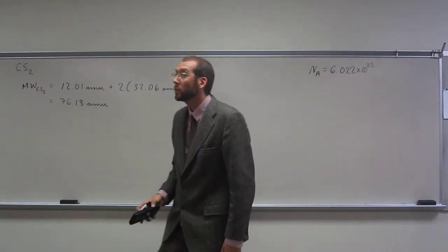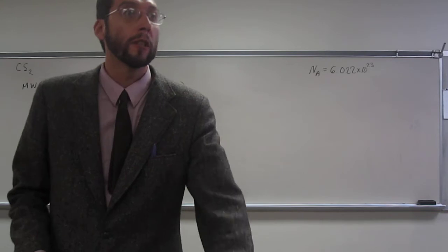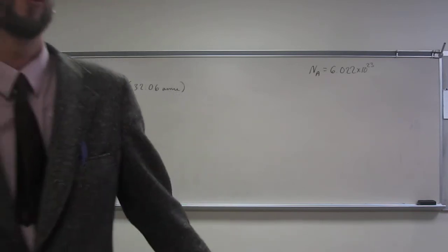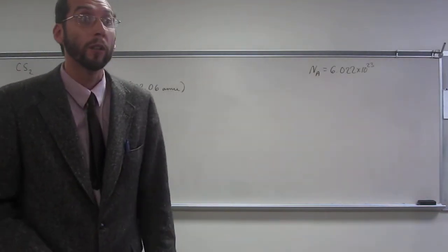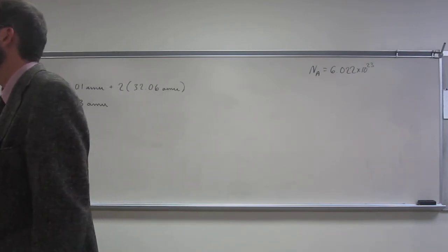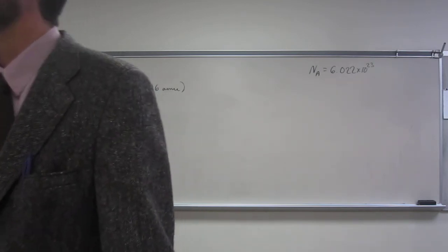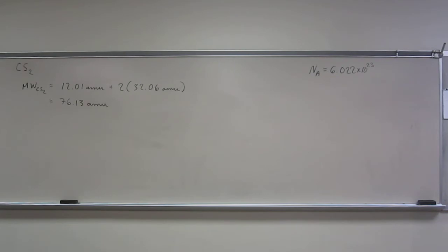So if I have a mole of pencils, right, it's 6.022 times 10 to the 23rd pencils. If I have a mole of carbon disulfide molecules, it's 6.022 times 10 to the 24th carbon disulfide molecules. Everybody cool with that? So what if I said, how much does 4 carbon disulfide molecules weigh? How would I figure that out?